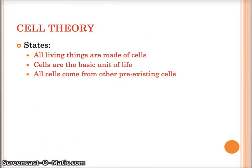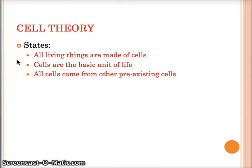Now, cell theory combines three of those guys. Cell theory is basically the theory about all of the cells together. Three components: first, everything that's living is made out of cells - all living things are made of cells. Two, cells are the basic unit of life, pretty much the smallest living unit. And number three, all cells come from already existing cells - that was Virchow, word for word.